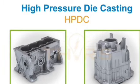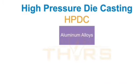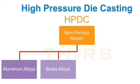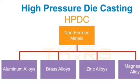HPDC processes. Though most commonly applied to aluminum alloys, HPDC may be used to cast other non-ferrous metals such as brass, zinc, or magnesium alloys.